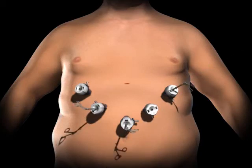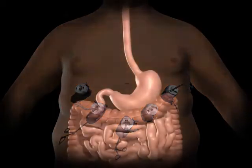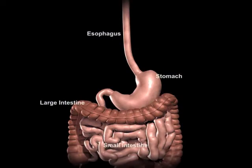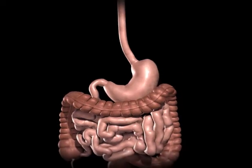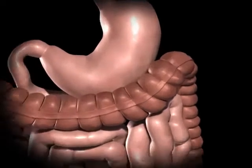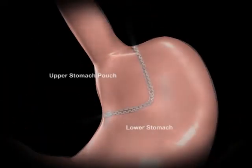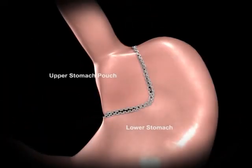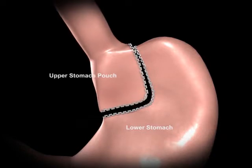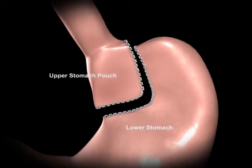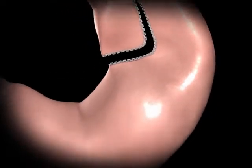The surgeon examines the abdominal cavity using a laparoscope or video camera. A small stomach pouch is created using a stapling device. This smaller stomach pouch restricts the amount of food that can be eaten before feeling full.